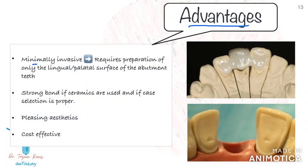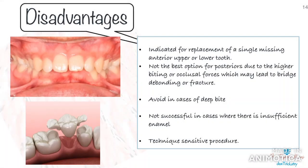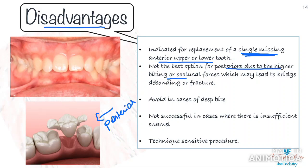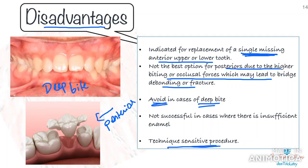Coming to the advantages: it is minimally invasive, preparing only the lingual surface of the abutment teeth. It has a strong bond, especially when ceramics are used, and with proper case selection it will have predictable success. Moreover, it is an excellent aesthetic option and cheaper than a conventional bridge or an implant. The disadvantages include: they are generally indicated for replacement of a single missing anterior tooth, upper or lower. Although it can be used in posteriors, it is usually not the best option due to higher biting occlusal forces which may lead to bridge debonding or fracture. It has to be avoided in cases of deep bite, as chances of debonding are very high. It is a technique-sensitive procedure. Avoid in cases where there is insufficient enamel, as that is necessary for forming a strong bond.